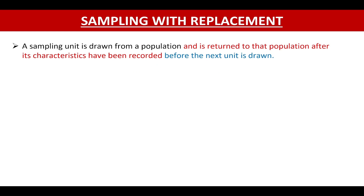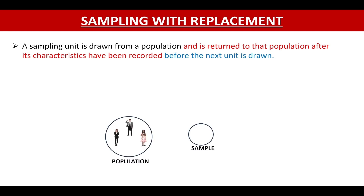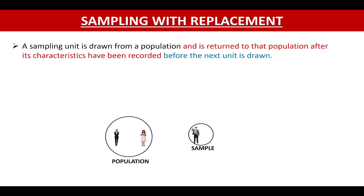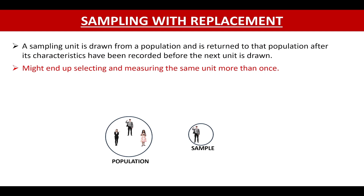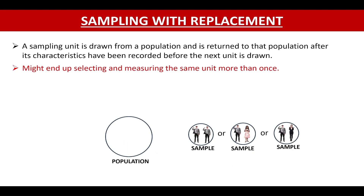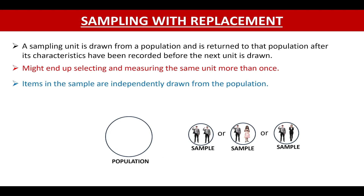Now coming to sampling with replacement. In case of sampling with replacement, a sampling unit is drawn from a population and is returned to that population after its characteristics have been recorded, before the next unit is drawn. Consider we have a population with population size 3 and we want to draw a sample with sample size 2. We will first draw a sampling unit, record its characteristics, and then replace it back to the population. In sampling with replacement, we might end up selecting and measuring the same unit more than once. So in the next draw, we might end up selecting the previous sampling unit or the other two units. Thus, items in the sample are independently drawn from the population.